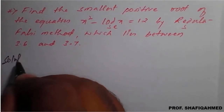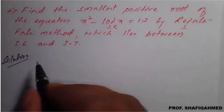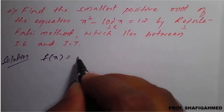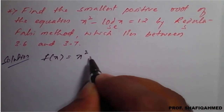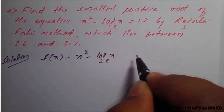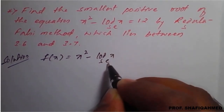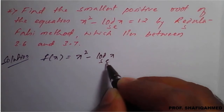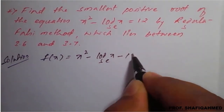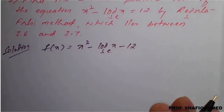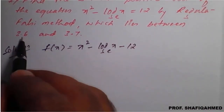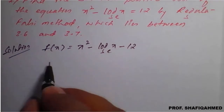Solution. The given function f(x) is: f(x) = x² - log x to the base e. Base e — if not specified, it is natural log only. This 12 you have to take inside, so it will become minus 12. The given roots are 3.6 and 3.7.